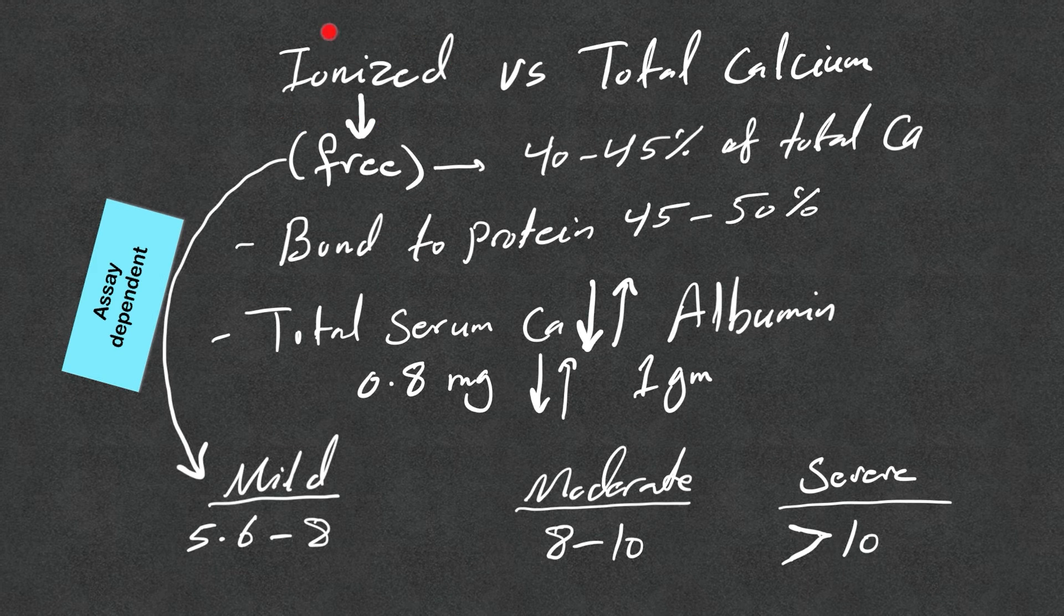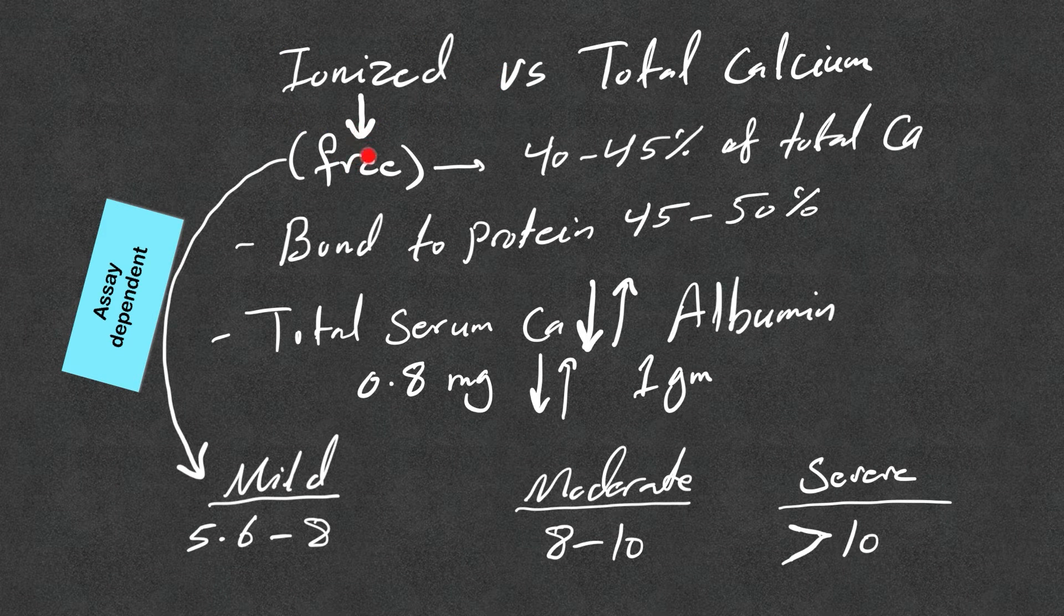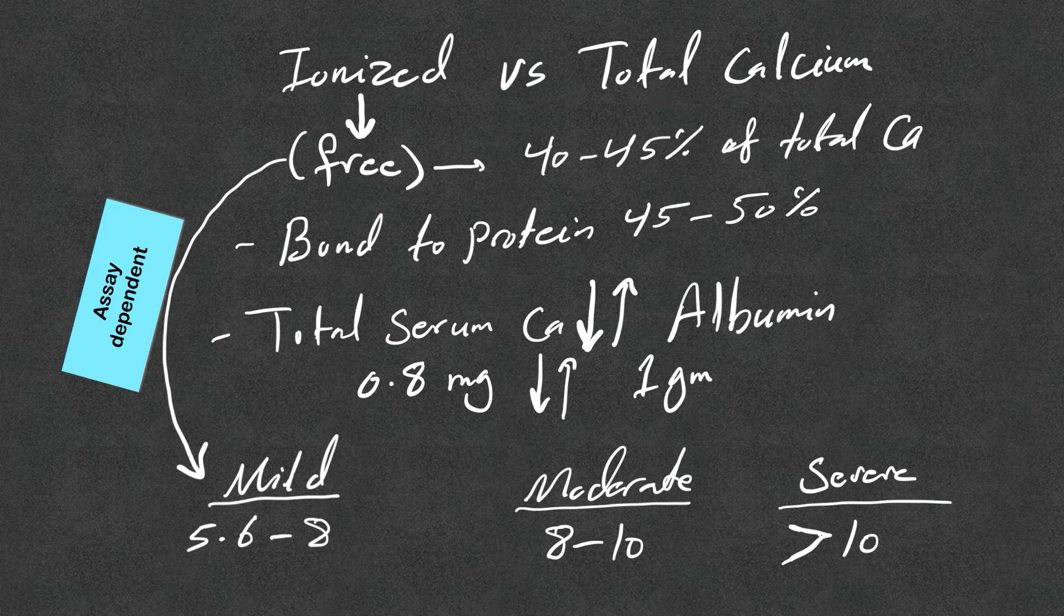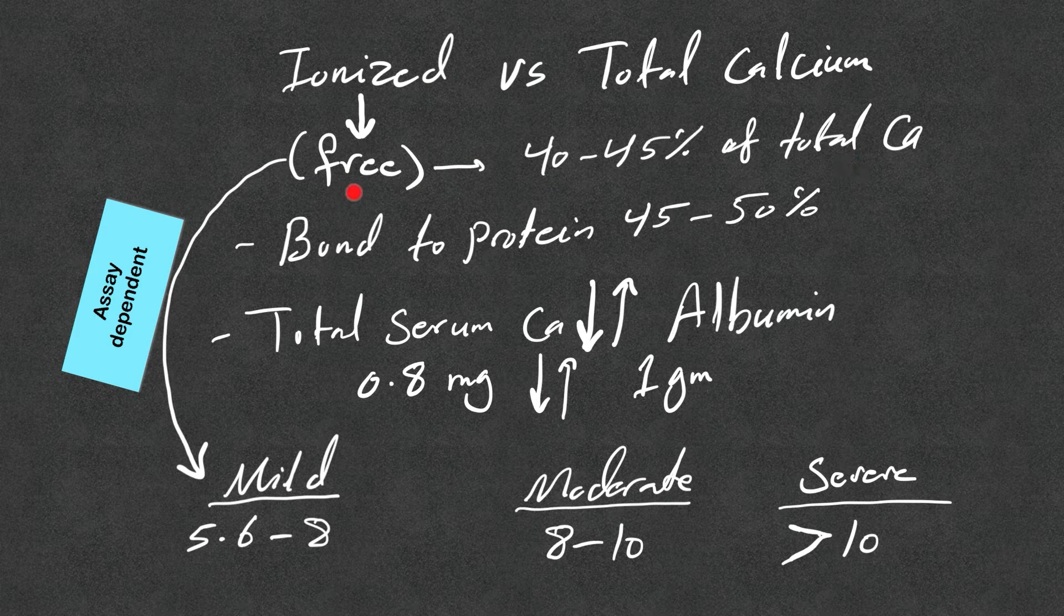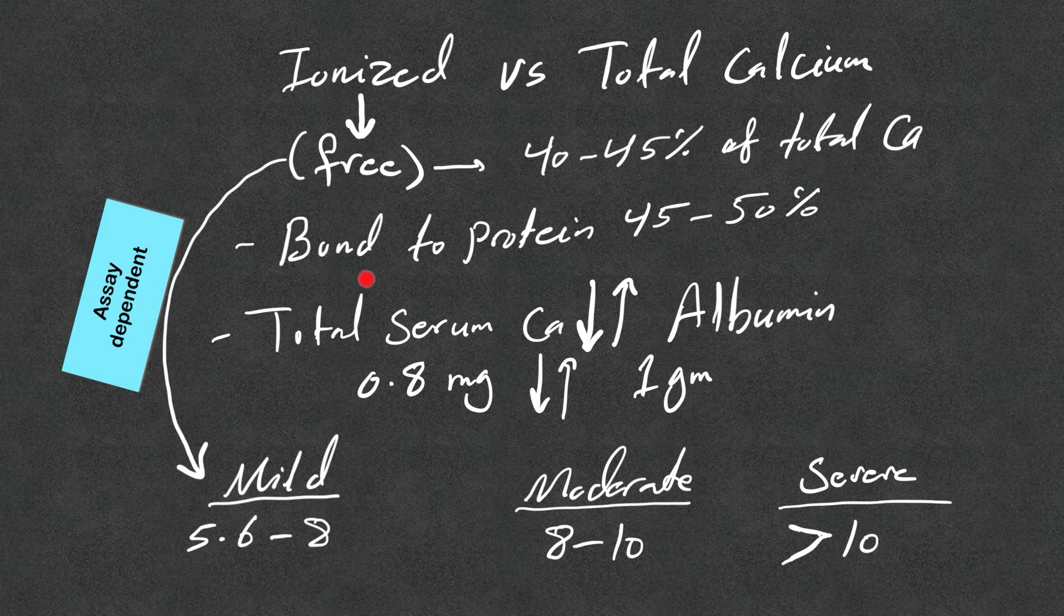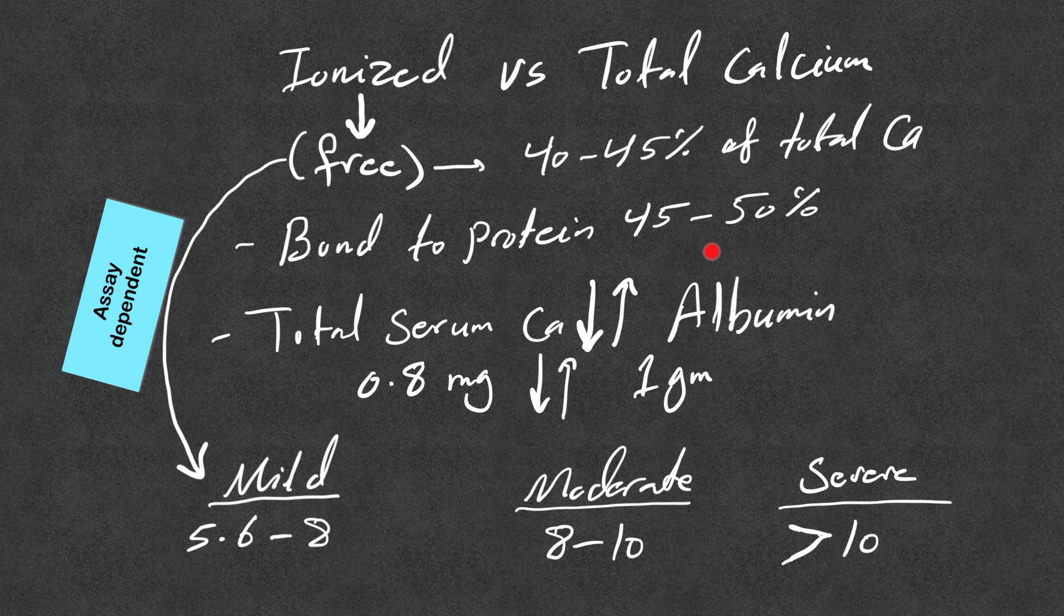It's very important to understand the difference between ionized or free calcium versus total calcium. Calcium in general in the body, 40 to 45 percent of total calcium is free or ionized, that means the rest 45 to 50 percent are bound to protein, mainly albumin.